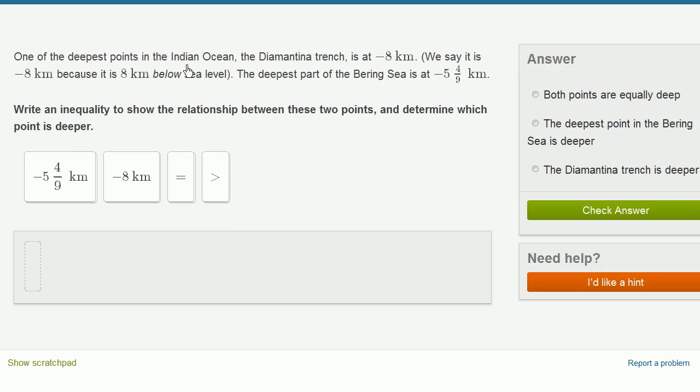One of the deepest points in the Indian Ocean, the Diamantina Trench, is at negative 8 kilometers. We say it is negative 8 kilometers because it is 8 kilometers below sea level. The deepest part of the Bering Sea is at negative 5 and 4 ninths kilometers.